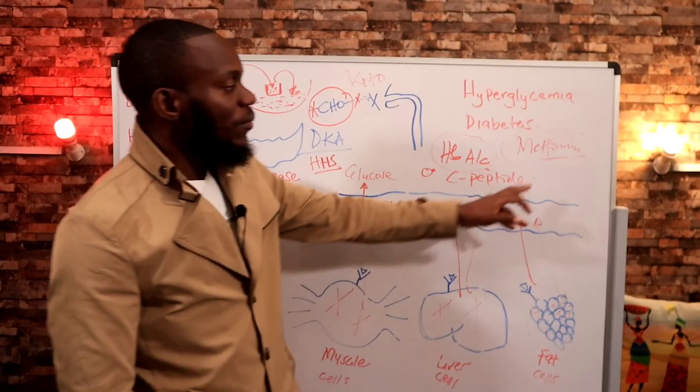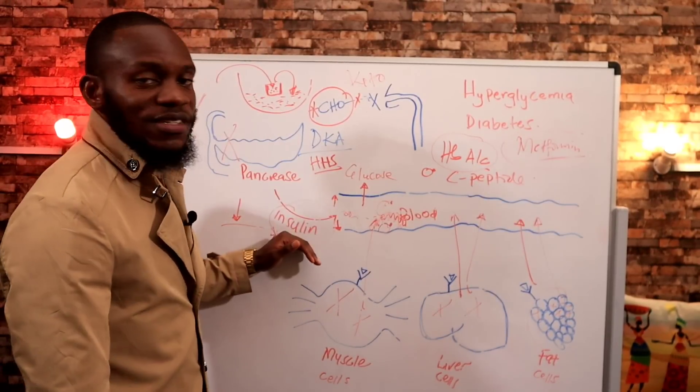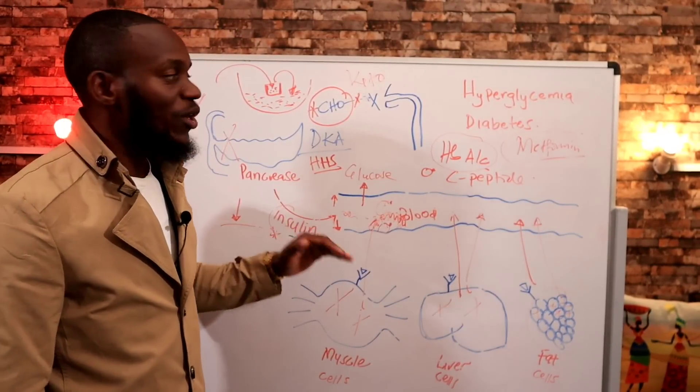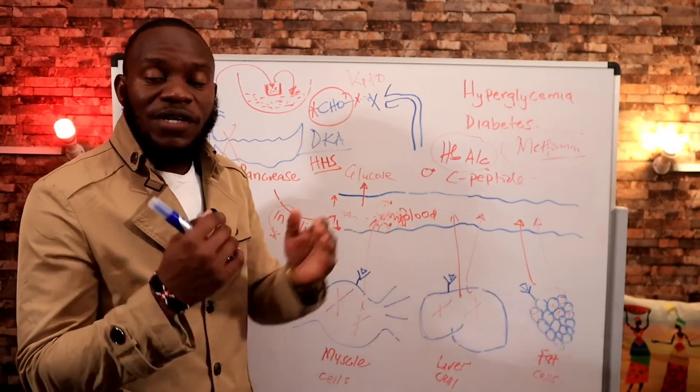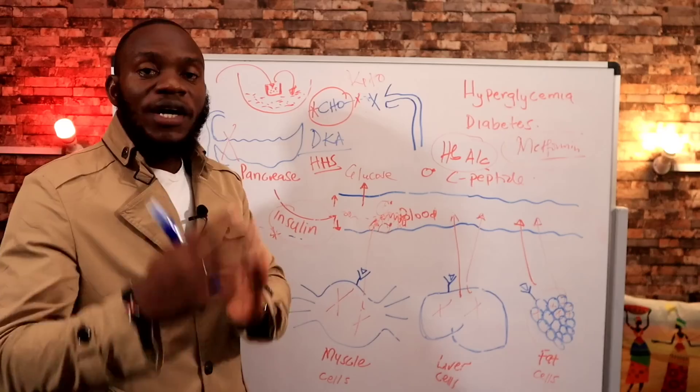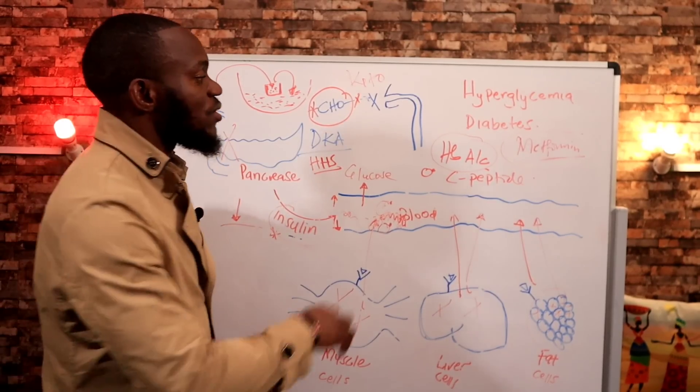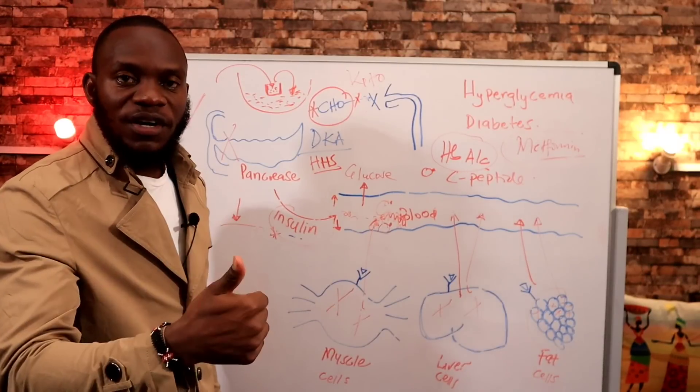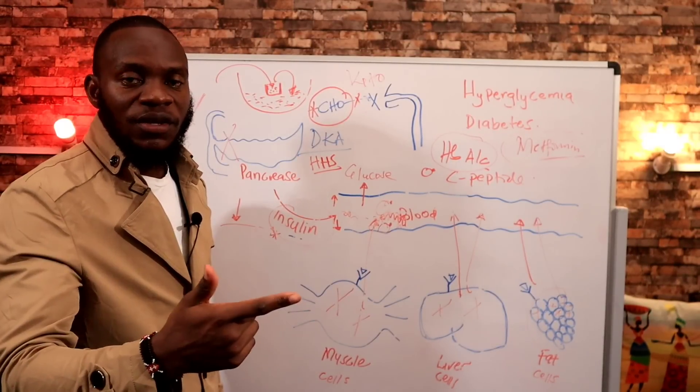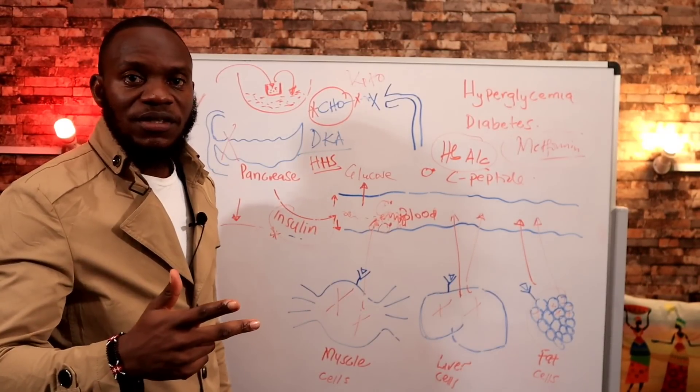Why is it that we're using metformin and insulin at the same time? And even more diabetes drugs. We're adding on the doses. Yet these people are not recovering. Why is it that you'll be told that you died of diabetes when actually you sticked faithfully on the drugs for diabetes? Why did you have heart failure? Why did you have a kidney failure? Why did you have that numbness? Why?